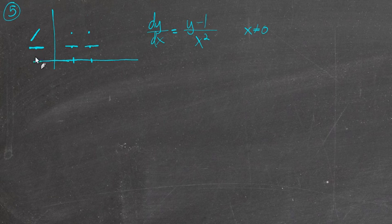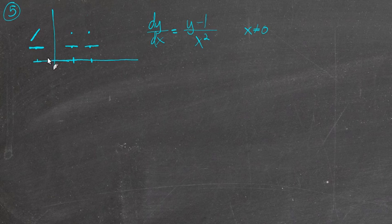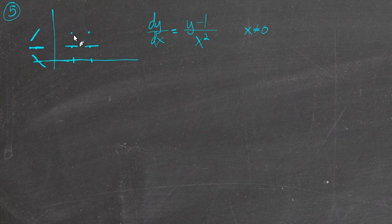Now let's come over here to negative 1, 0. So negative 1 squared is 1. 0 minus 1 is negative 1. Negative 1 over 1 is a negative 1 slope.